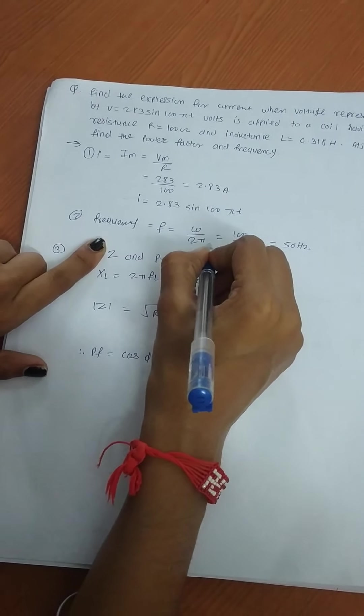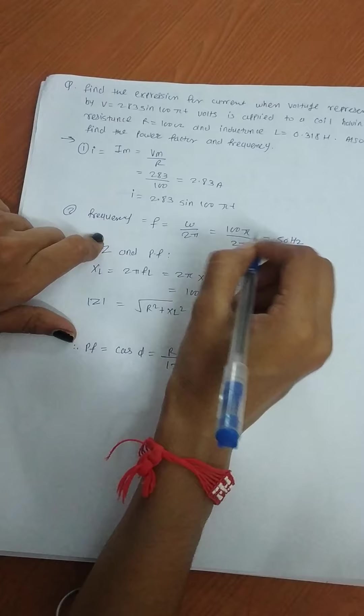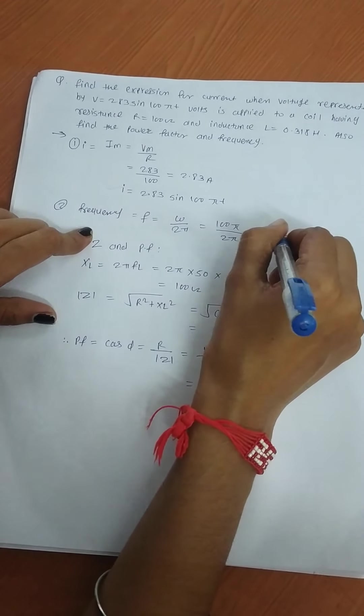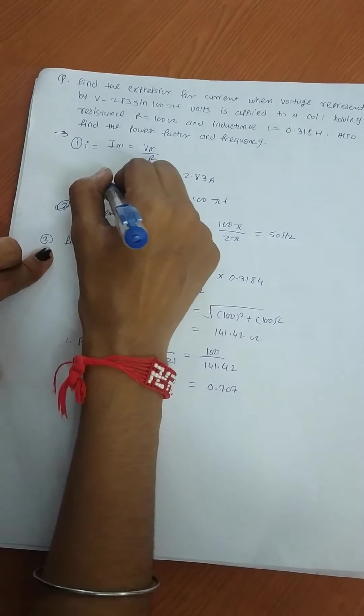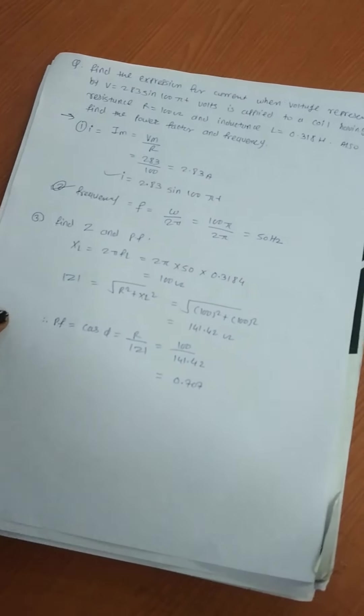Frequency F = ω/2π. The value of ω is 100π, so F = 100π/2π = 50 hertz. The frequency is 50 hertz and current is 2.83.